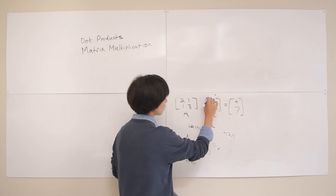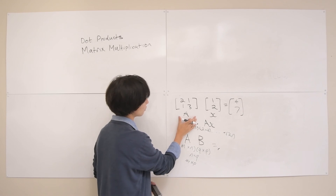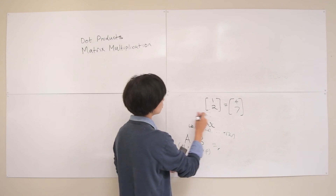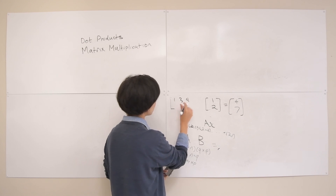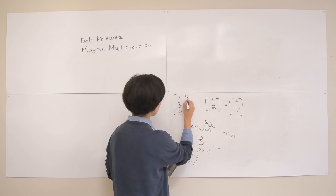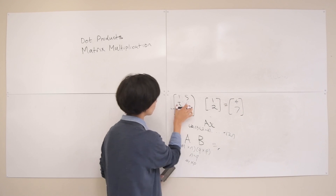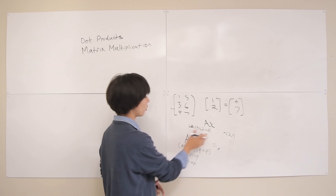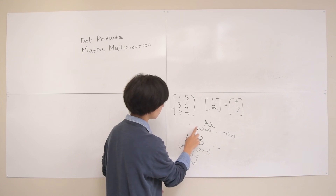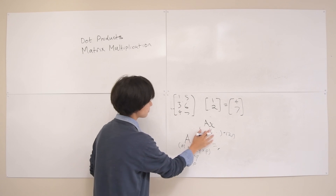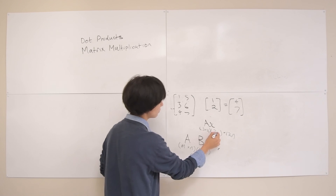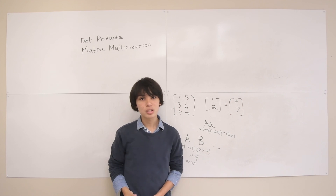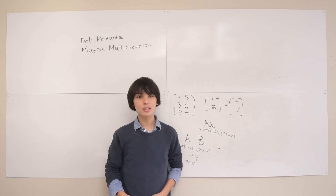Matrix-vector products are very critical and will show up basically everywhere in this course. The vector must come after the matrix, and the number of rows in the vector must equal the number of columns in the matrix — which doesn't have to be square. For example, a 3×2 matrix times a 2×1 vector gives a 3×1 result. Thanks for watching and I'll see you in the next lecture!